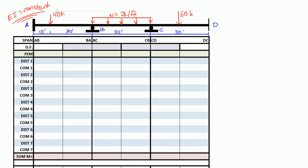And we have a 40 kip load acting on span AB at 10 feet from A. We have a uniformly distributed load of 2 kip per foot acting on span BC, length 30. And we have a point load of 60 kips acting on span CD right at the middle of the span, so at 15 feet from either C or D.